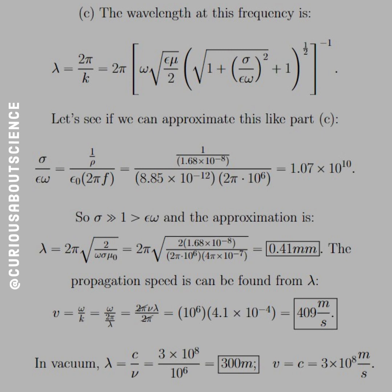And in vacuum, c over nu is equal to 300 meters for the wavelength. And the speed is equal to 3 times 10^8 meters per second. So it definitely makes a difference.